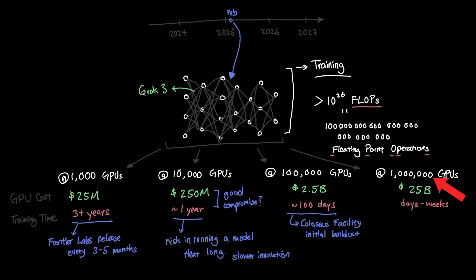Finally, at 1 million GPUs, you need an investment of around $25 billion, and now training Grok 3 starts to look more like in a matter of days to weeks rather than months. This is the direction that most frontier labs are heading towards, where you can have millions of GPUs dedicated to train models to innovate at a faster rate.